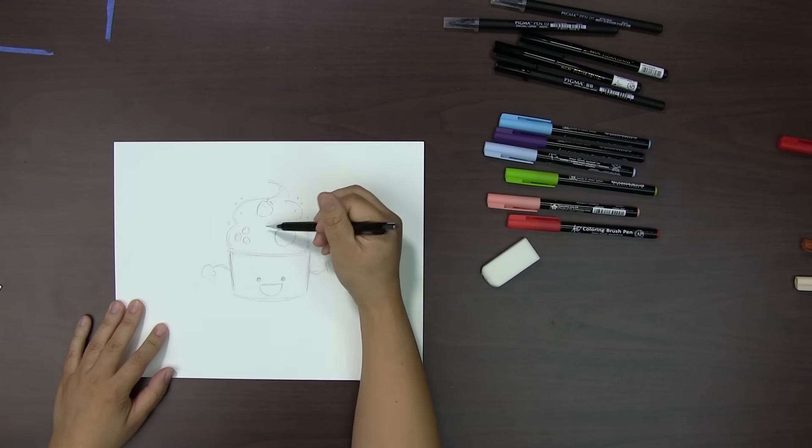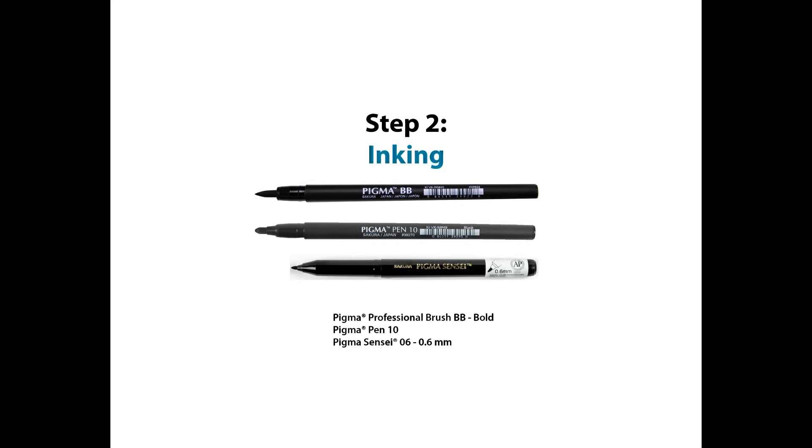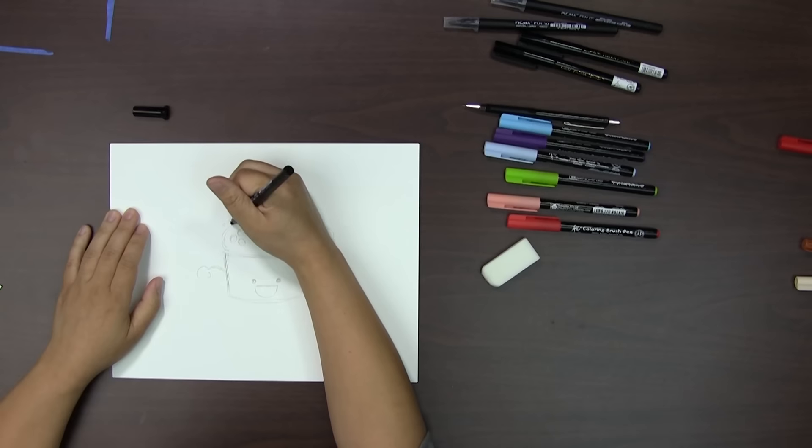So he's smiling. Step 2 is inking. I'll be using the Pigment Professional Brush BB, the Pigment Sensei 10, and the Pigment Sensei 06.